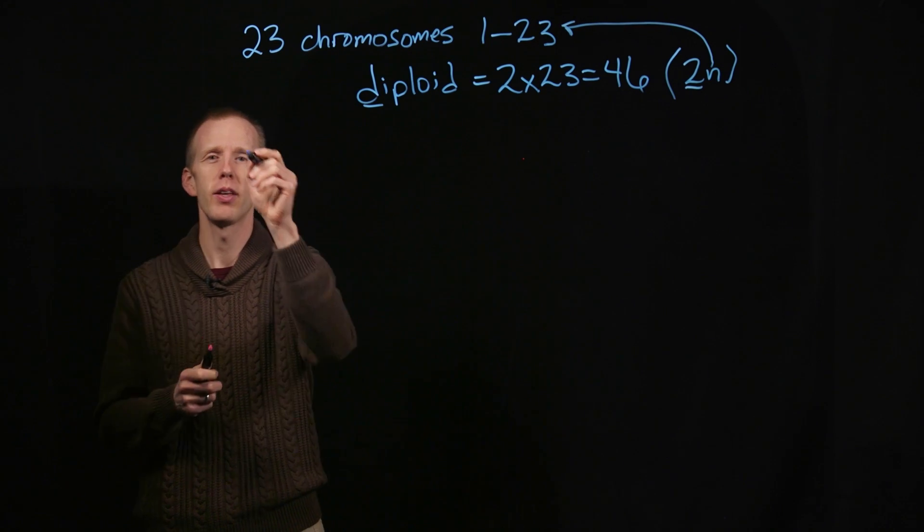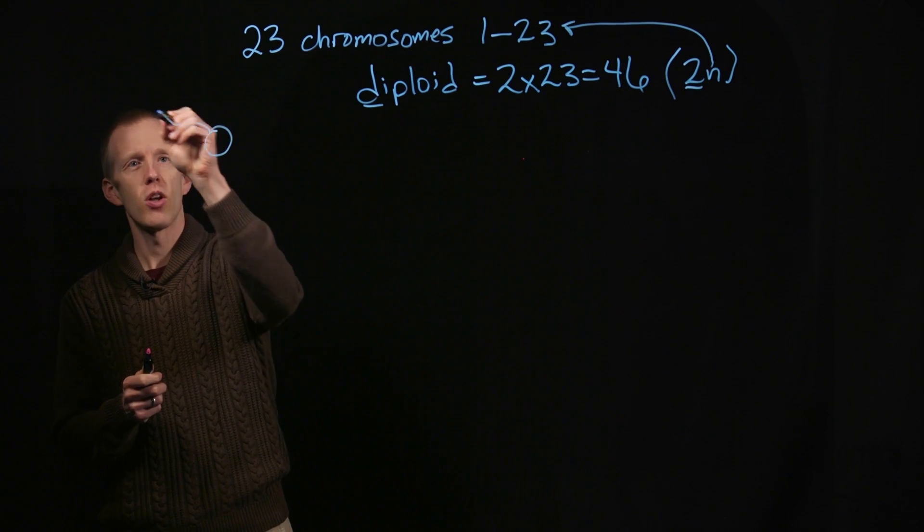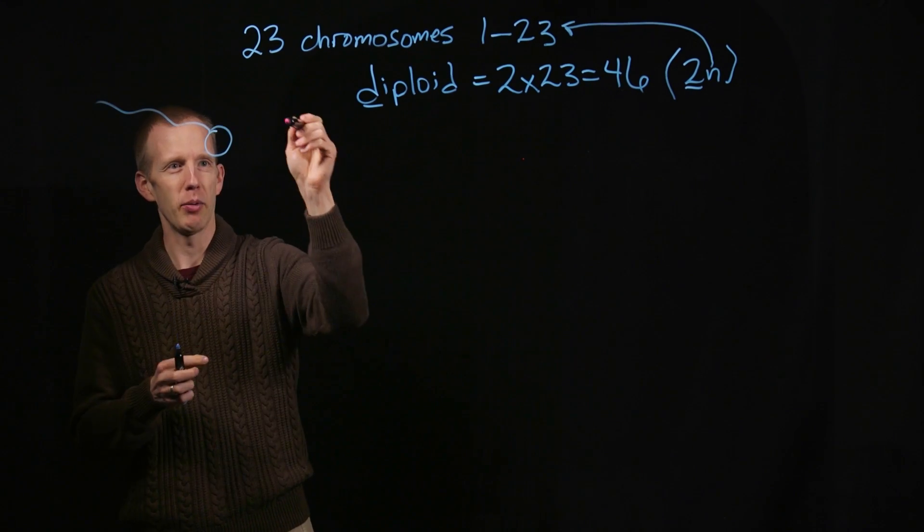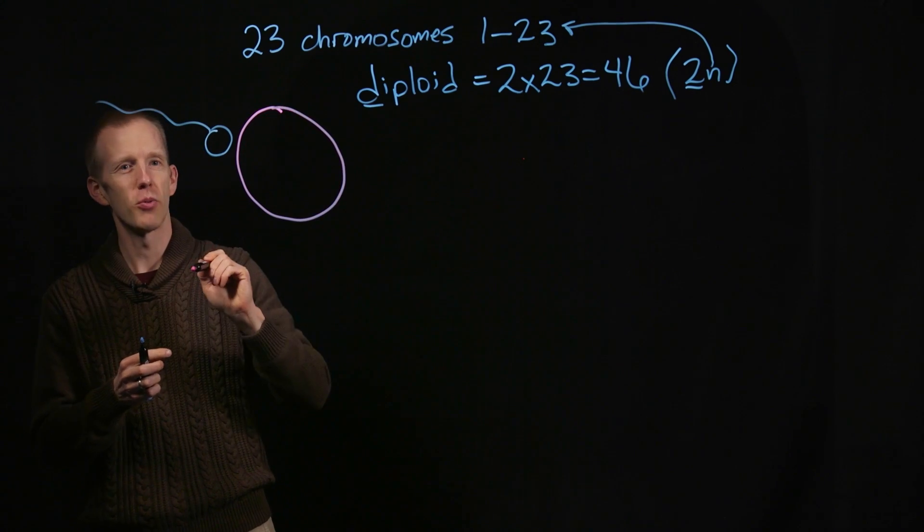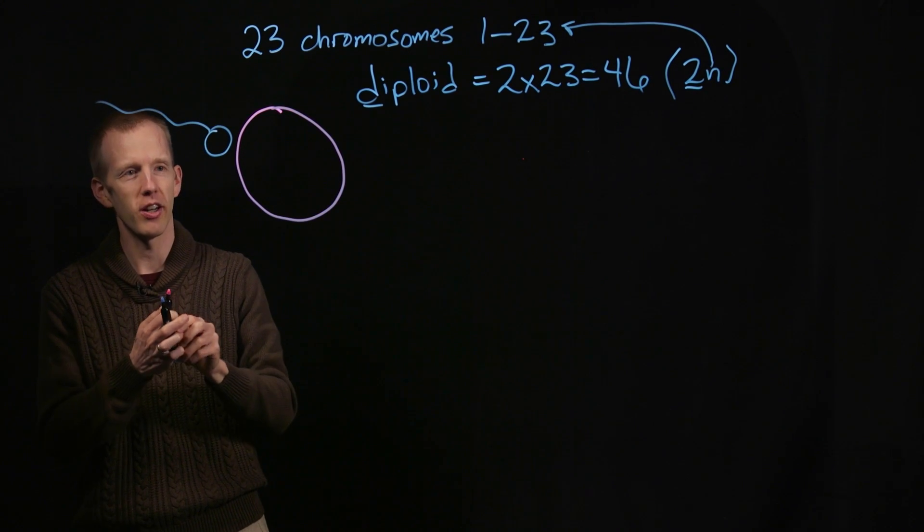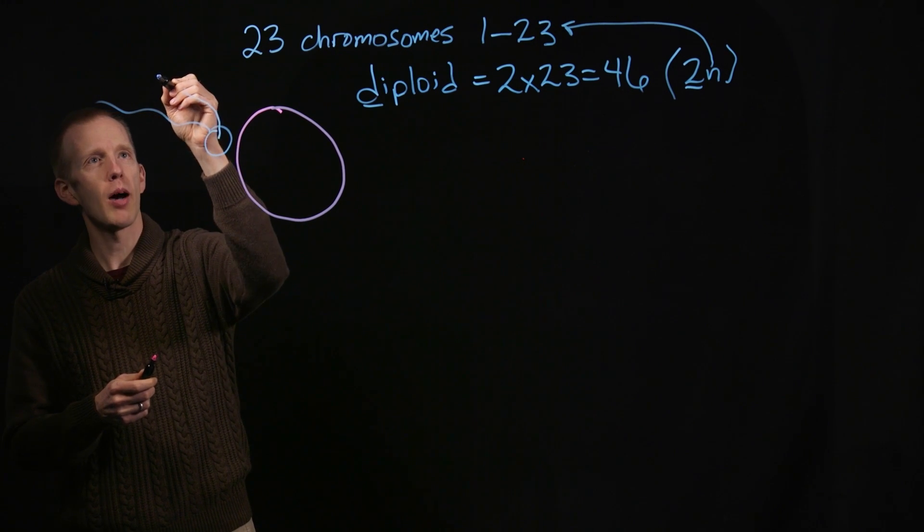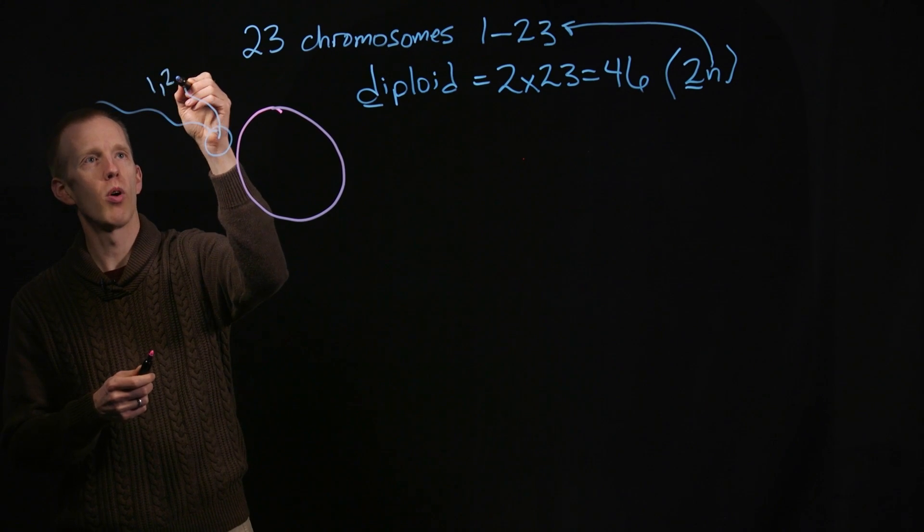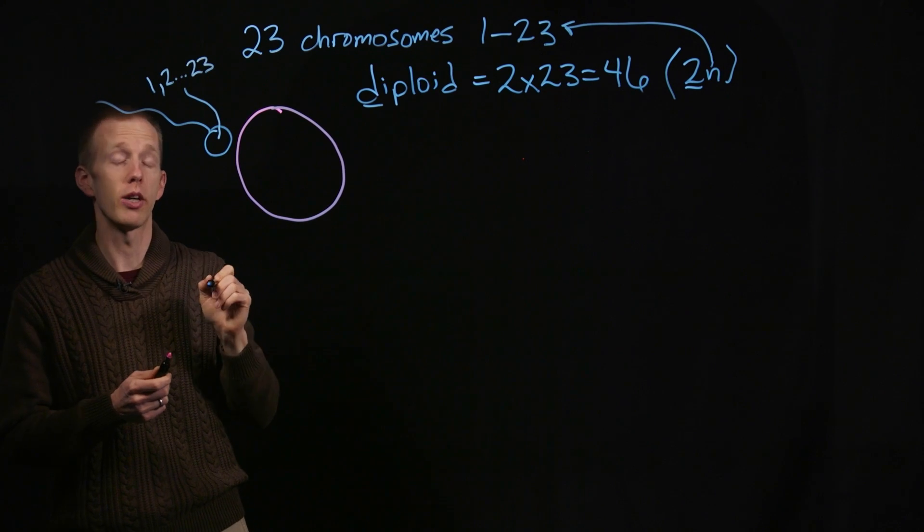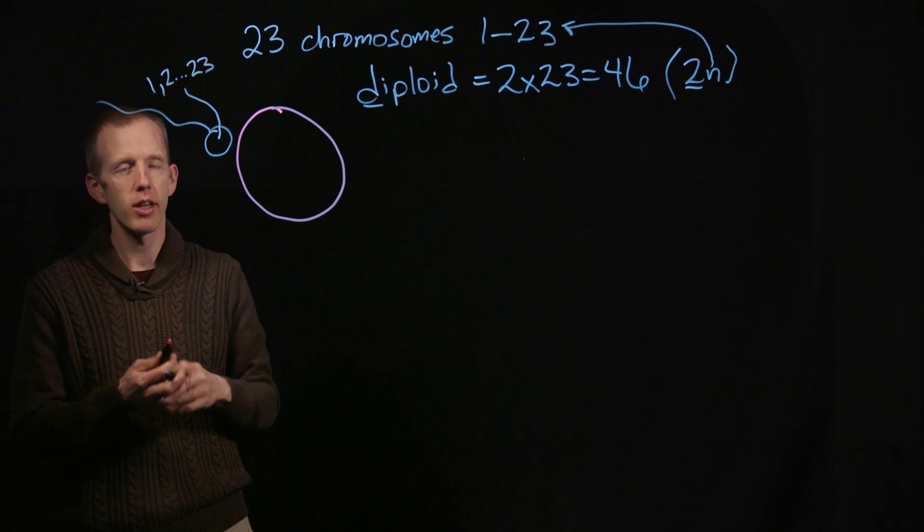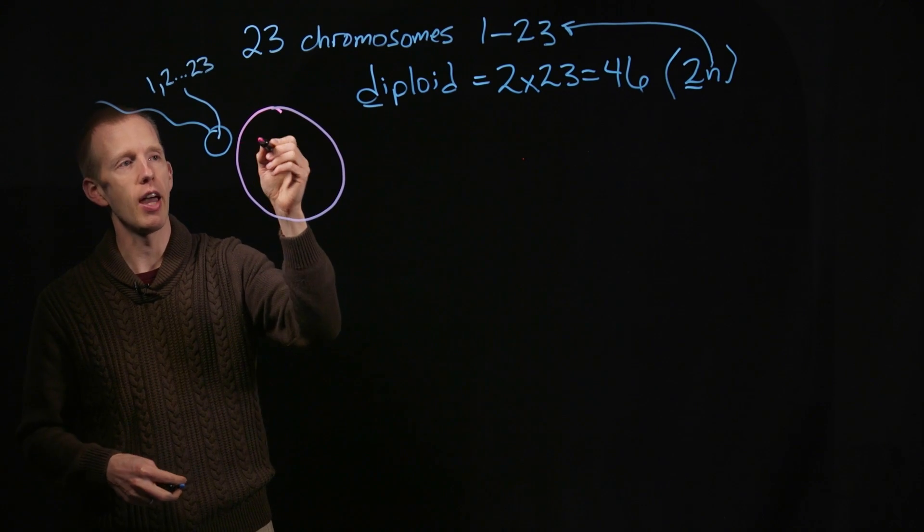So where did these chromosomes come from? Well, we all started when this event happened, when the sperm met the egg at fertilization. And inside that sperm, there was one copy of each of the chromosomes, chromosome 1, chromosome 2, and up to the 23rd chromosome.